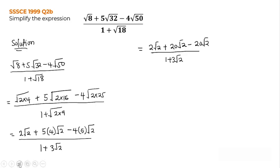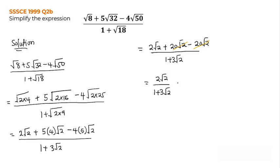Now if you look at this expression, we have 20 root 2 minus 20 root 2, so these cancel and become 0. Our expression is now equal to 2 root 2 over 1 plus 3 root 2. This is very easy — we only have one root sign at the top. We can now go ahead and multiply both the numerator and denominator by the conjugate of this expression.